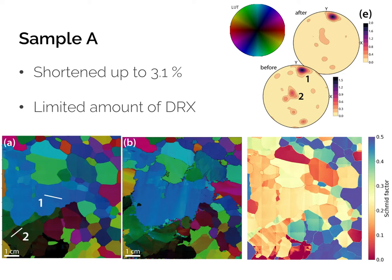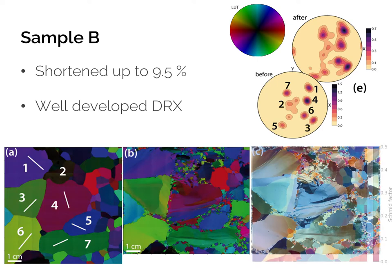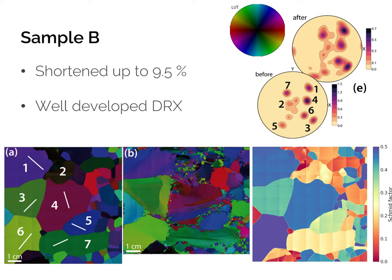The direction of the basal planes on the observation surface is indicated with white lines. It should be noted that the Schmid factor is essentially a proxy for single crystal analysis, as the stress direction can vary locally in a polycrystal, but it serves as a reference. Sample B was deformed up to 9.5% in a two-day creep experiment, with a good development of dynamic recrystallization affecting almost all grain boundaries. The grain size is more homogeneous than in sample A. The Schmid factor values for activating basal glide vary a lot, with grains 1, 4, and 6 in blue colors very well-oriented to trigger basal glide.